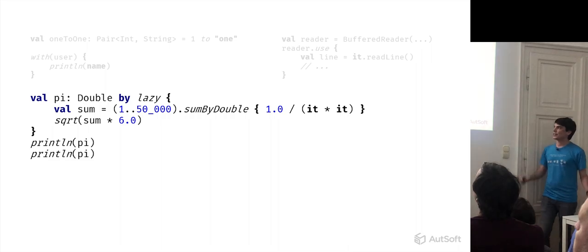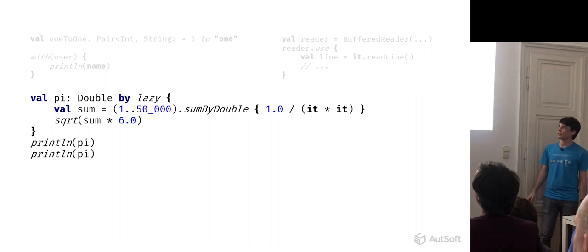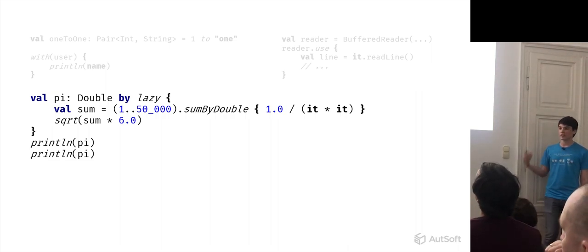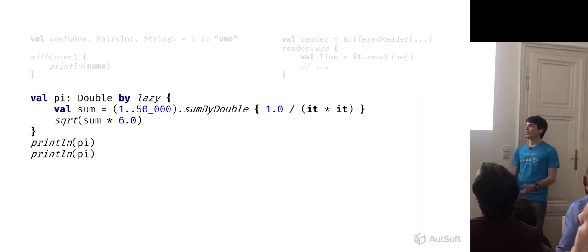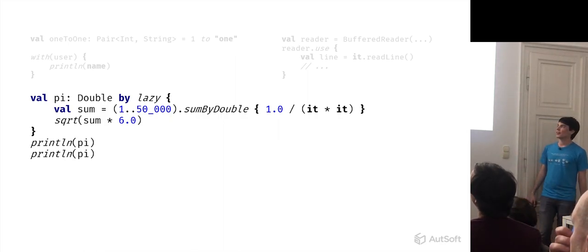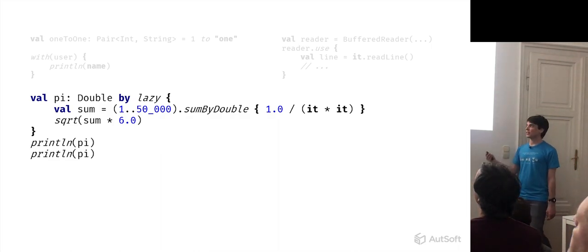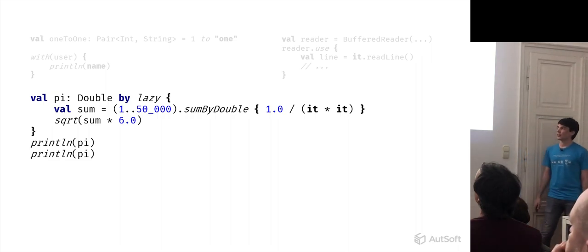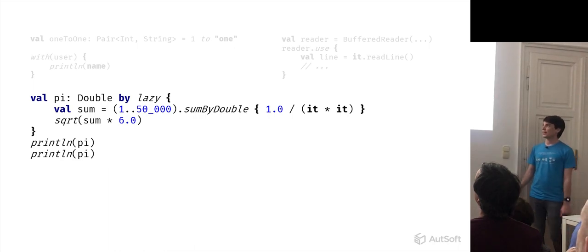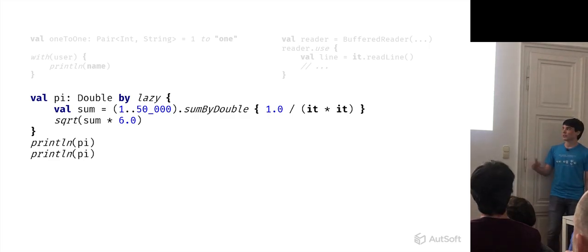And then there is `lazy`, which is a way of declaring a property so that the code you use to initialize it isn't run when the property itself is created. If this property is inside a class, this initialization code doesn't run when the class is being created. Instead, it will be computed when you first access this property, and this value will then be cached. So for any subsequent accesses, it doesn't have to be recomputed — you will just get the already initialized value.